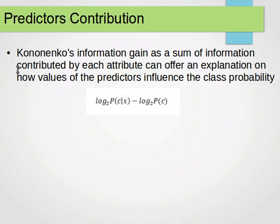To find the predictor contribution for the naive Bayes classifier, we can use Kononenko's information gain as the sum of information contributed by each attribute. Kononenko's information gain can offer an explanation on how values of the predictors influence the class probability, how much effect each of them has on the class probability. The formula is log base 2 of probability of the class given the predictor X minus log base 2 of the probability of the class itself. We can compute that and see how much each predictor contributes or influences the class probability.